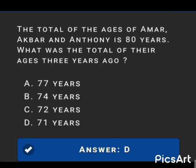Next MCQ: The total of the ages of Amir, Akbar, and Anthony is 80 years. What was the total of their ages three years ago? The answer is option D: 71 years.